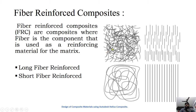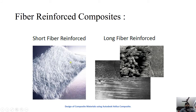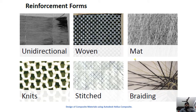Short fibers can be randomly oriented or aligned in a certain direction within the matrix. Similarly, long fibers can be randomly oriented or aligned in one direction. For example, short glass fibers randomly oriented form one type of composite, while glass fibers continuously and uniformly embedded in the matrix form a long aligned glass fiber composite.